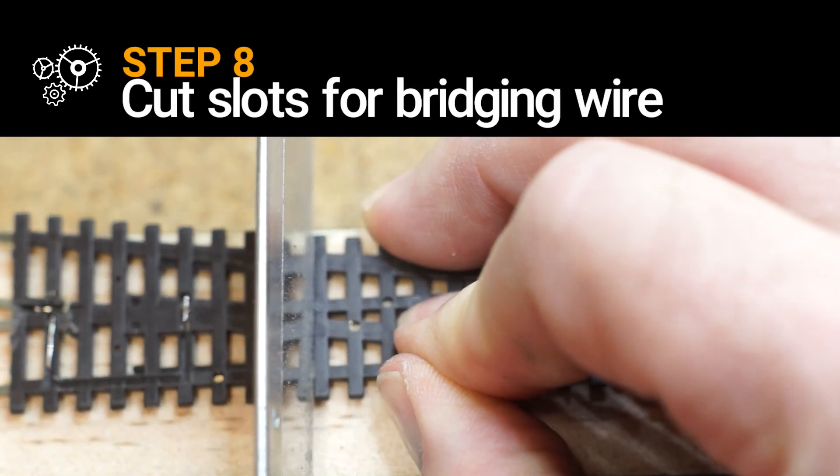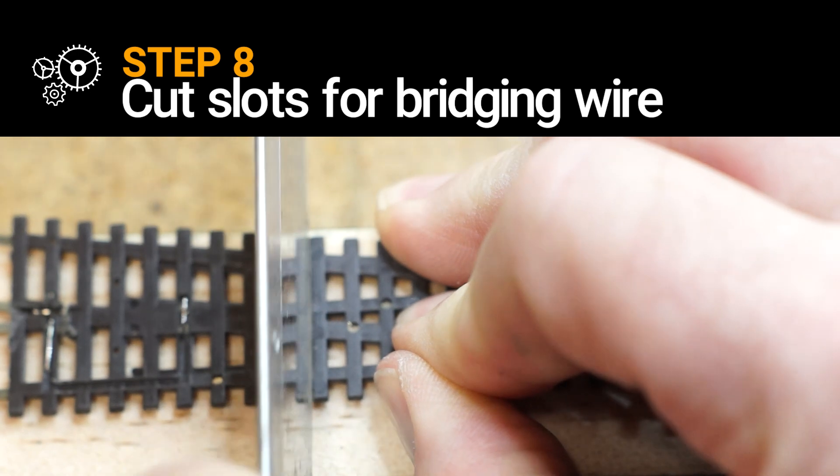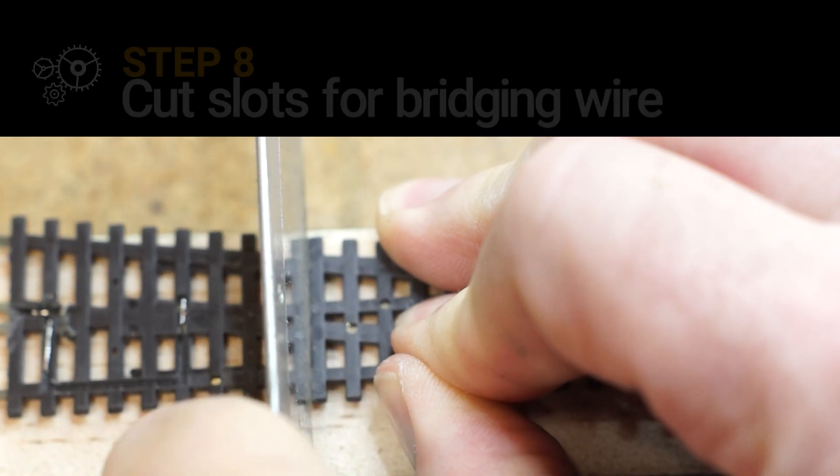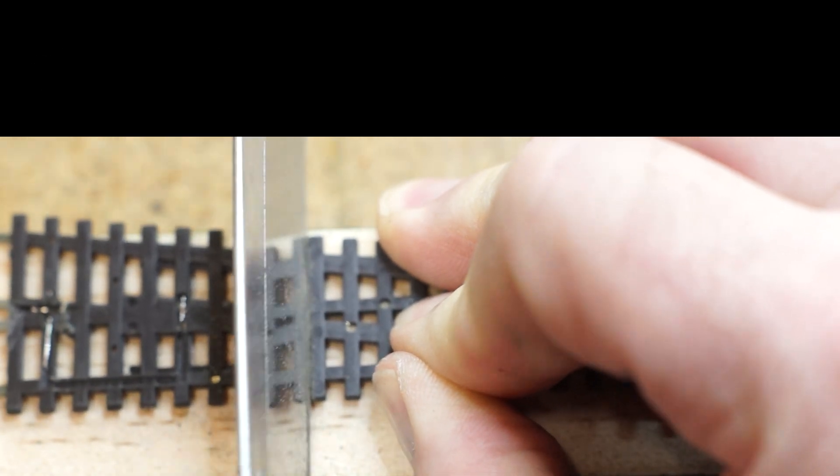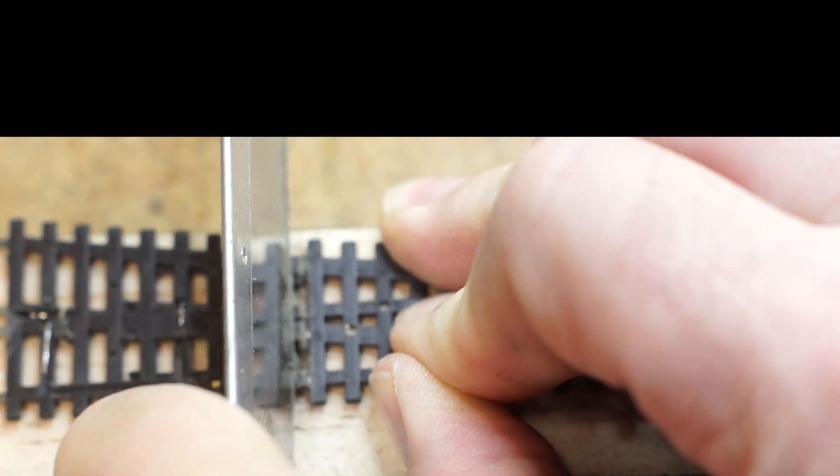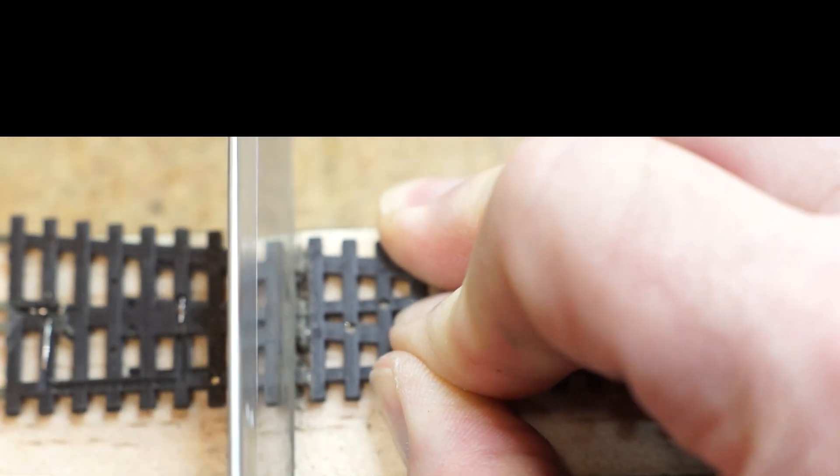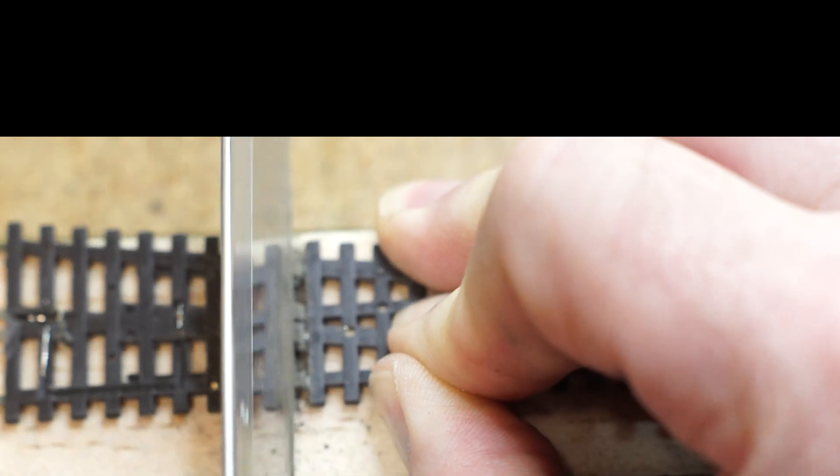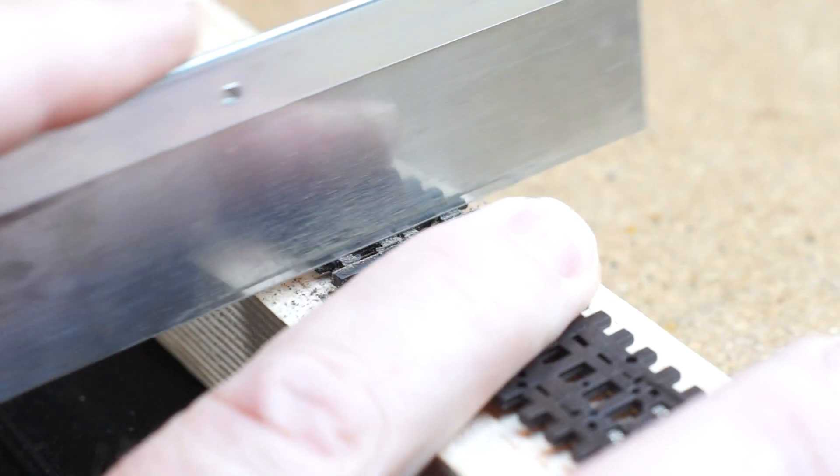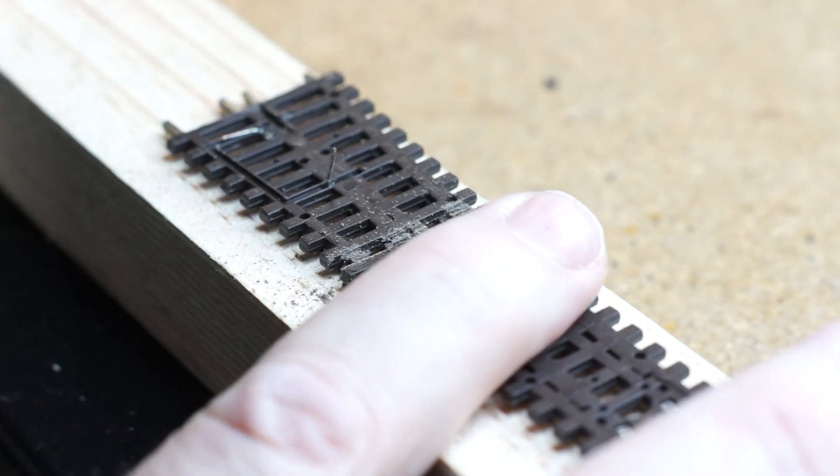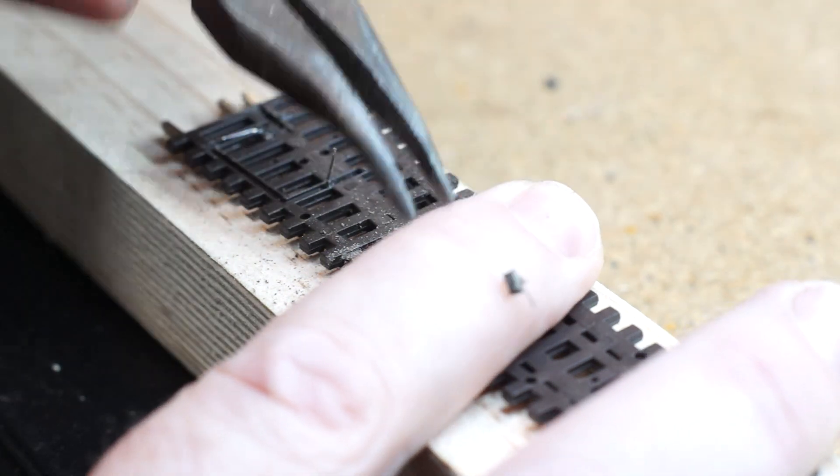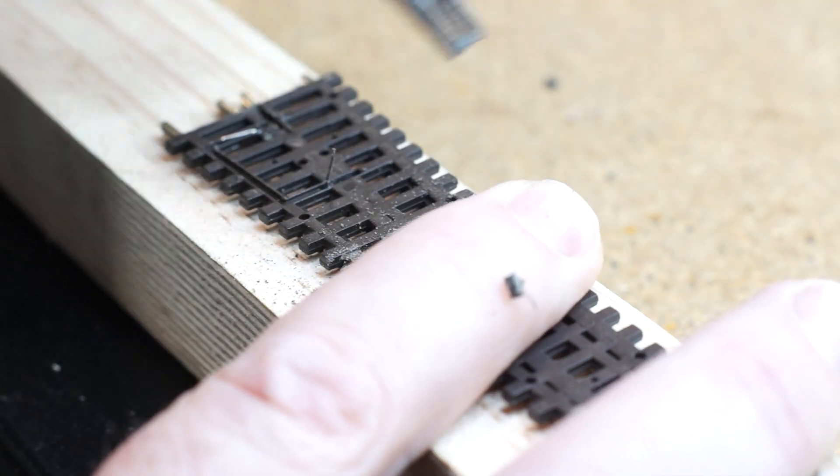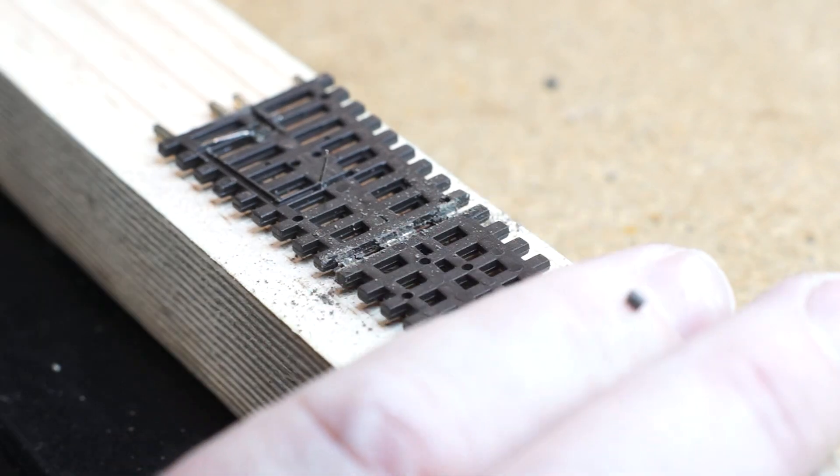Step 8: cutting slots for bridging wire. Now we need to prepare a space to solder bridging wire from the outer stock rails to the inner closing rails. This is what provides the turnout with its fully live status, which is fundamental to why we're doing all this. I use a modelling saw for straight cuts across four tyres in one go, then file the exposed rails for a nice contaminant-free soldering surface.